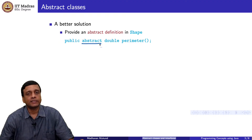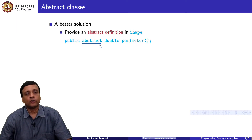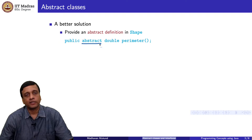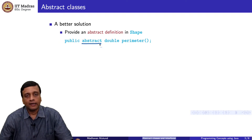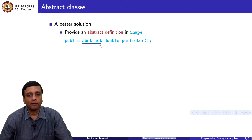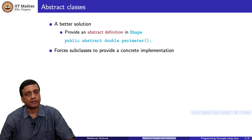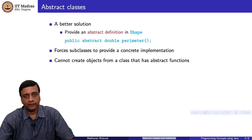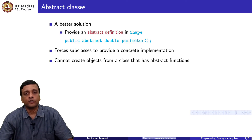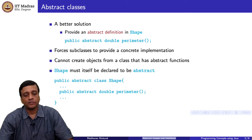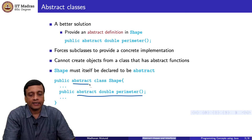An abstract function definition is a function header. What we are saying is that this class requires this function to be implemented by any subclass, because this one does not have a definition. Every subclass is now forced to provide a concrete implementation of this abstract method. Clearly if I have a function which is not defined, I cannot create an object of that type, because the object will come equipped with a function I cannot execute — I know its signature, but there is no code to execute it. So if you have an abstract method inside your class, the entire class has to be declared abstract.